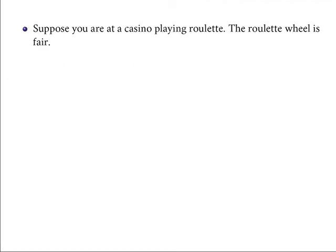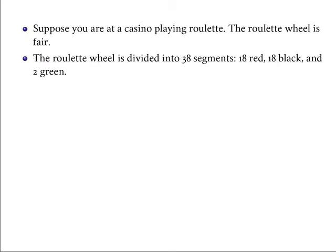So what is the gambler's fallacy? Suppose you are at a casino playing roulette. The roulette wheel is fair. A roulette wheel is divided into 38 segments — kind of like a big pizza with 38 slices. 18 of those slices are red, 18 are black, and the remaining two are green.